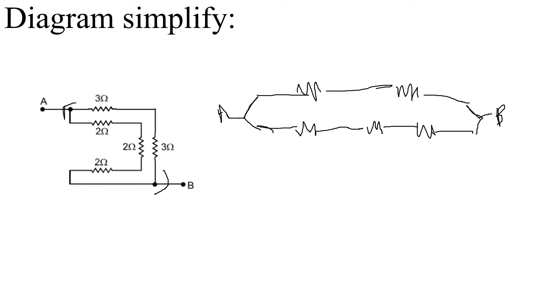So this is a 3-ohm resistor, this is a 3-ohm resistor, this is 2, 2, and 2. So for solving, first we need to solve this, this is series number 1.